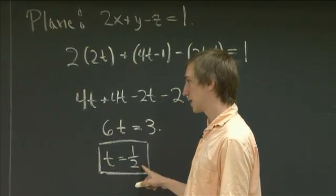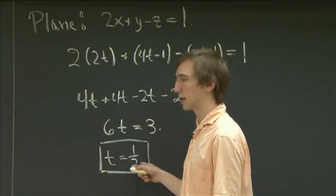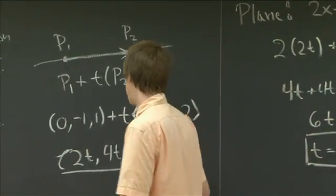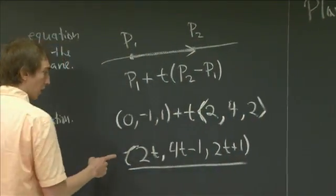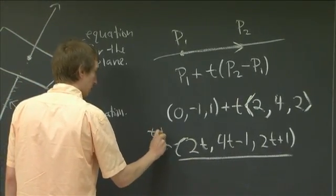And finally, to get our answer, we need to go back over to our parametrization of the line and plug in T equals 1 half. So coming back over here, plugging in T equals 1 half...